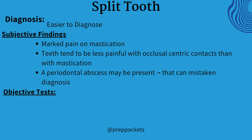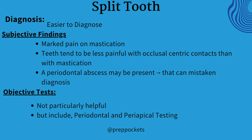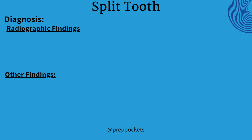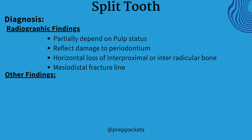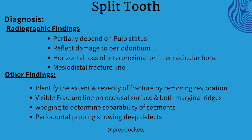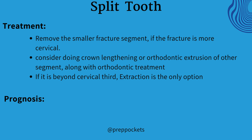Teeth tend to be less painful with occlusal-centric contacts than with mastication. There may be a periodontal abscess that can mislead the diagnosis. Objective testing is not very helpful, but periodontal and periapical tests are quite helpful. Radiographic findings show a damaged periodontium with horizontal bone loss of interproximal or interradicular bone. If a restoration exists, remove it to identify the extent and severity of the fracture. Wedging of the segments determines separability, and periodontal probing shows deep probing defects. If the fracture is more cervical, treatment involves removal of the smaller segment and considering crown lengthening or orthodontic extrusion of the other segment. If the fracture is beyond cervical, extract the tooth and replace it. The split tooth, if treated, shows a poor prognosis.